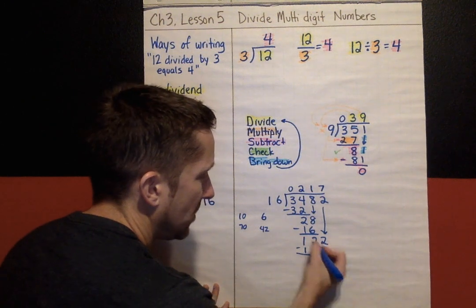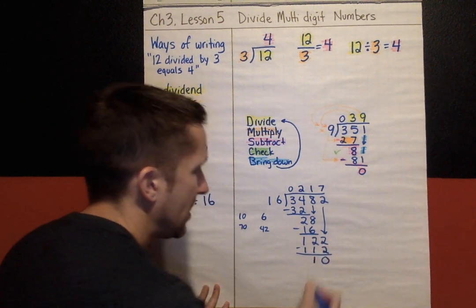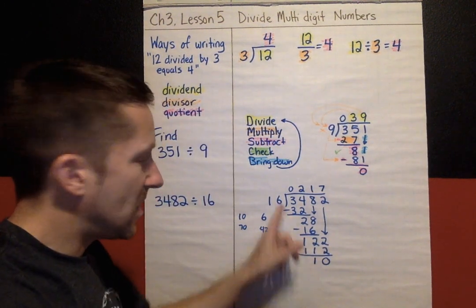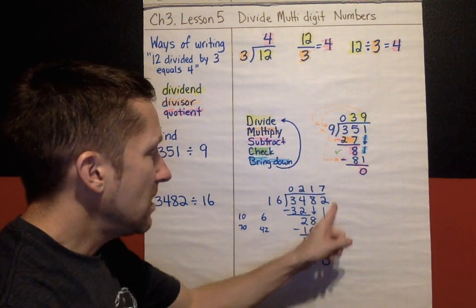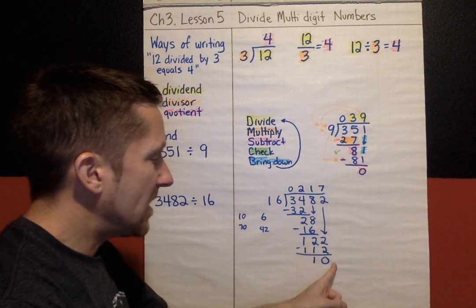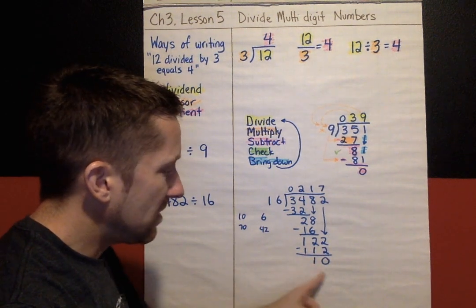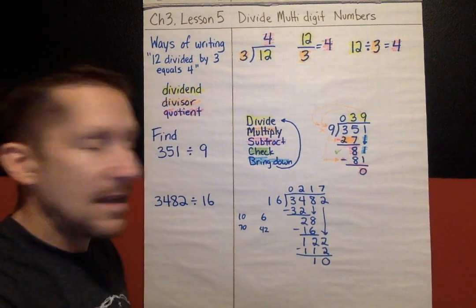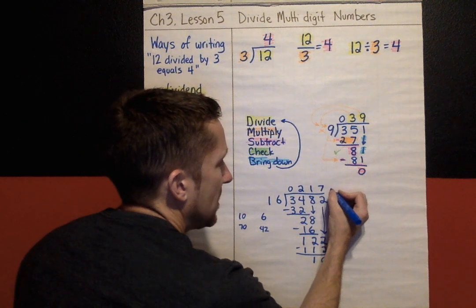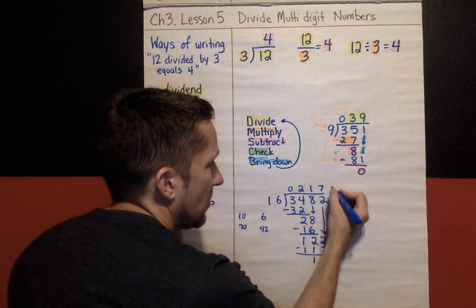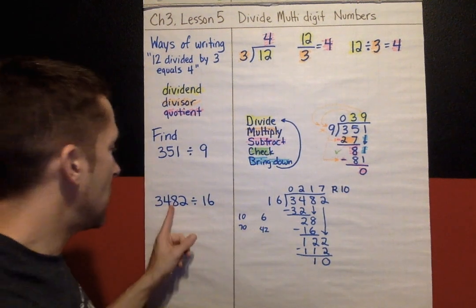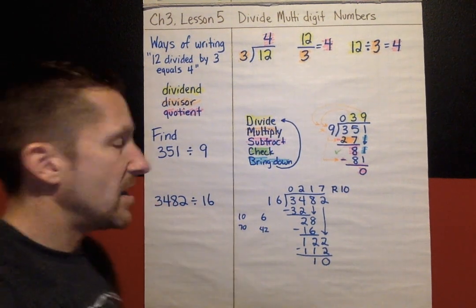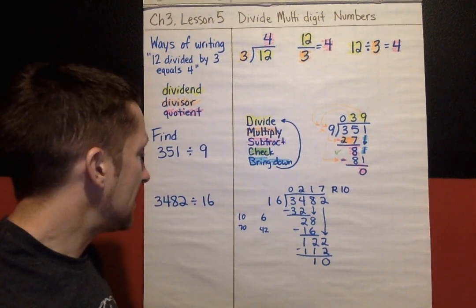Subtract. 2 take away 2 is 0. 2 take away 1 is 1. Is 10 smaller than 16? The answer is yes. I keep going. But there are no more numbers to bring down. So in this problem, 10 is a leftover. It is going to be 217 remainder 10 would be my answer for 3482 divided by 16.